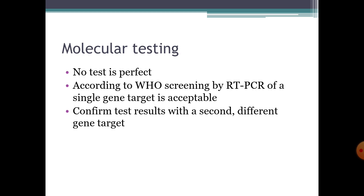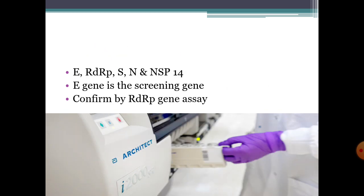For molecular testing, no test is perfect. According to WHO, screening by RT-PCR of a single gene target is acceptable, and results should be confirmed with a second different gene target. Gene targets include envelope or E gene, RDRP — RNA-dependent RNA polymerase — S-spike, N for nucleocapsid, and non-structural protein NSP14. WHO recommends the E gene as the screening gene, confirmed by RDRP gene assay.